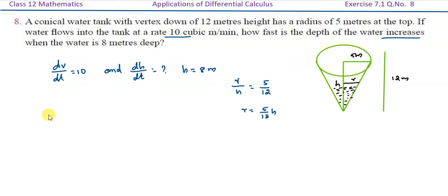The volume is equal to 1/3 π r² h. We replace r, so 1/3 π times (5/12 h)² times h, which is equal to 1/3 π times 25/144 times h³, which equals 25π/432 times h³.